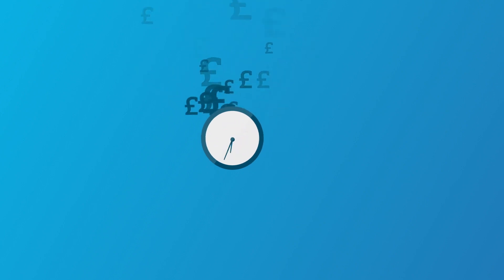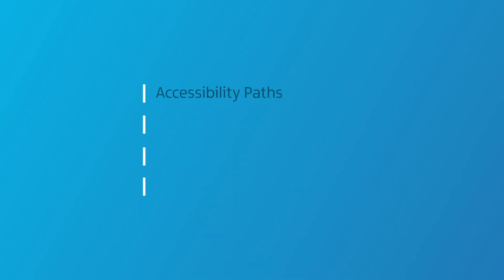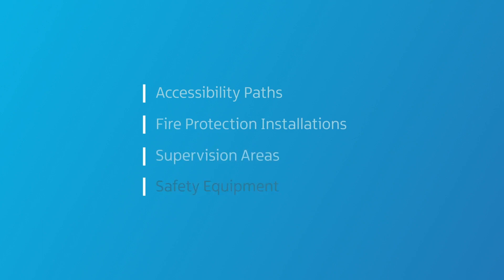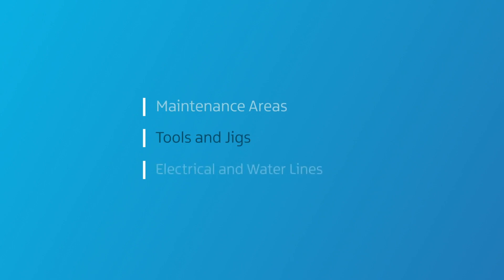Typically auxiliary services such as stores, restrooms and break areas represent around 30% of the space at a facility. Auxiliary services include spaces for the workforce such as accessibility paths, fire protection installations, supervision areas and safety equipment; materials such as stores and quality control areas; machinery such as maintenance areas, tools and jigs; and electrical and water lines.